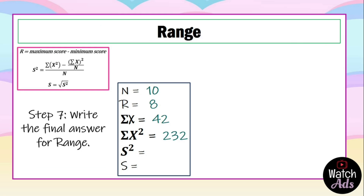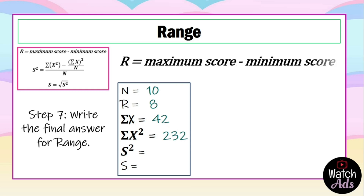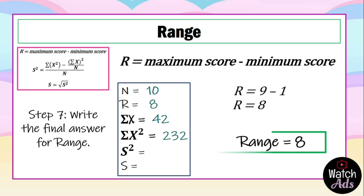For step 7, write the final answer for range. Our formula is R = maximum score − minimum score. We already computed this: R = 9 − 1 = 8. So our range equals 8, and that is our final answer.